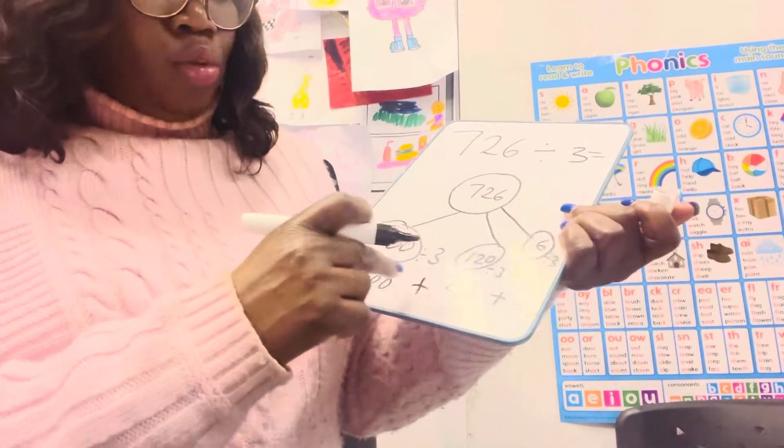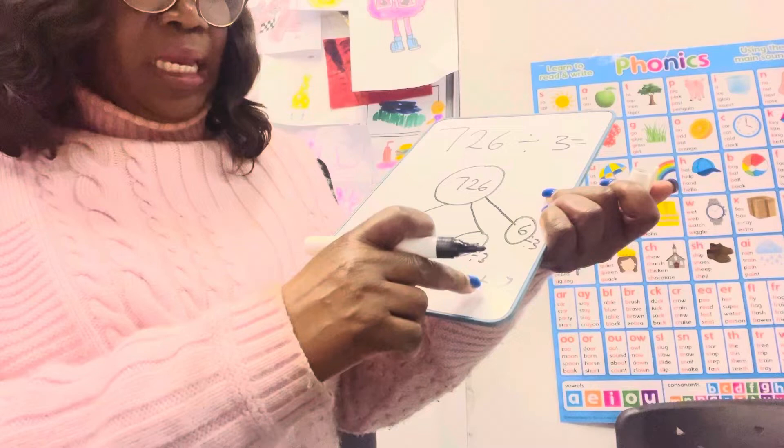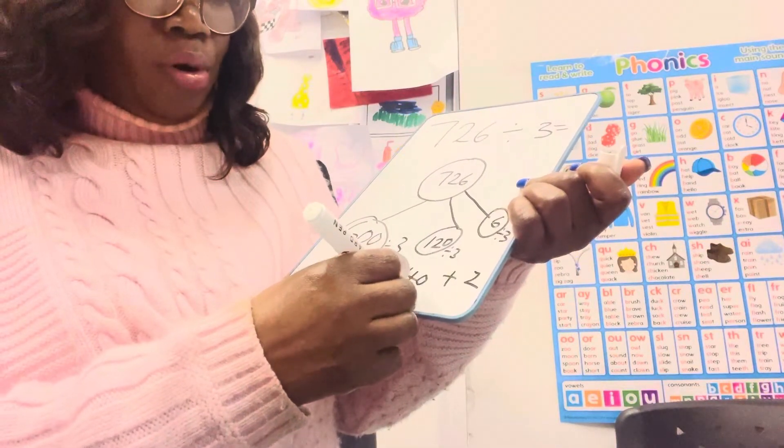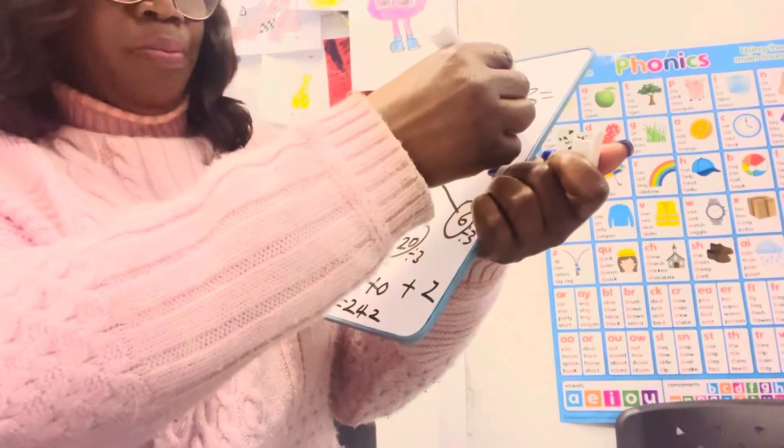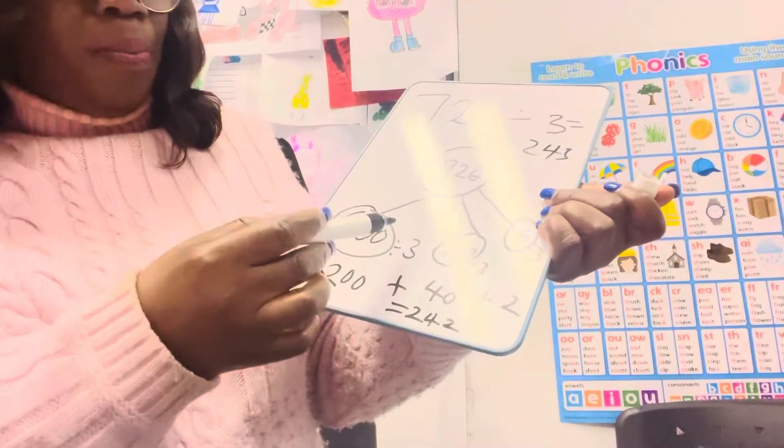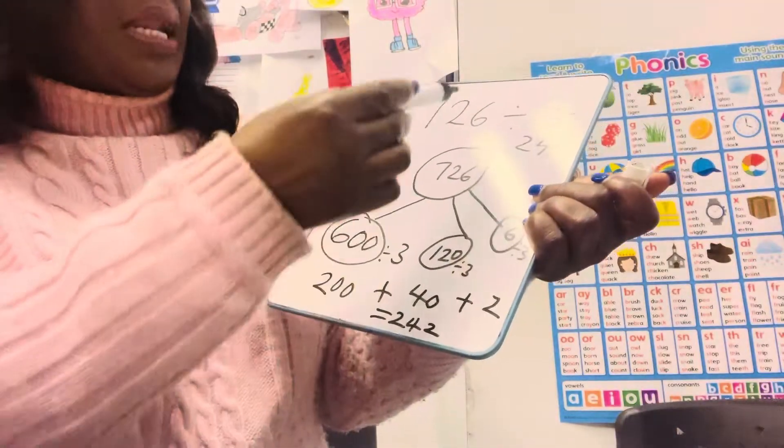So remember, the next step that we need to do is to add them together. 200 add 40 is 240, and plus 2 is 242. So the answer is 242.